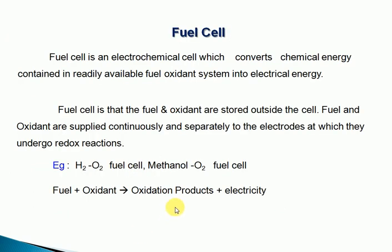Now discussing fuel cells in Tamil: A fuel cell is an electrochemical cell in which chemical energy is converted into electrical energy. When fuel and oxygen are used, they produce byproducts plus electrical energy. In the fuel cell, fuel plus oxygen are supplied in a continuous, separate electrode cell. Oxidation and reduction — redox reactions — take place. This is the fuel cell.